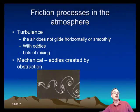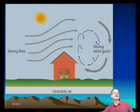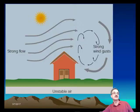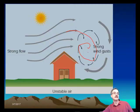We create these mechanical eddies because of obstructions on the surface of the Earth. We can create unstable air by a strong flow going over a house, as we see here. We get these eddies on the leeward side of the house, and then this mixes the air and creates unstable air.